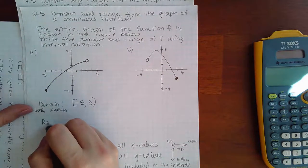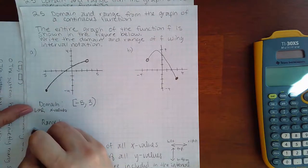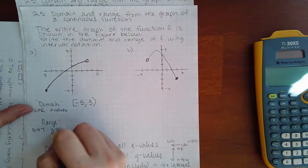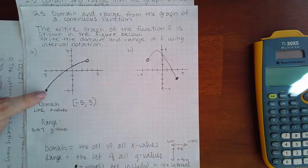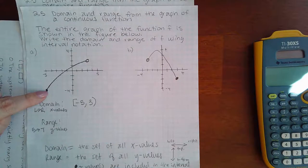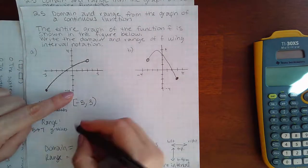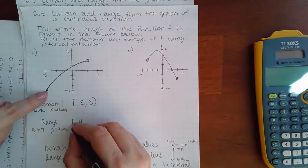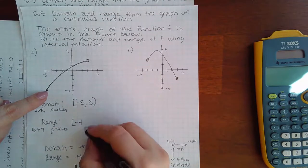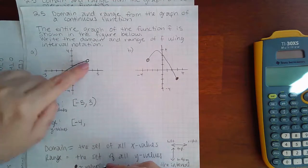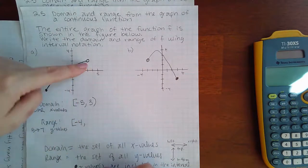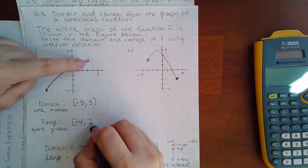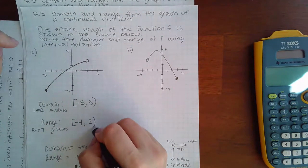Now, for range, that's going to be from the bottom to the top, and I have to use the y values. So this is the very bottom of the graph, and the corresponding y value is negative 4. And it does have a solid dot, so I must use the bracket. Then how high does it go? So it goes the highest it is here, and that y value is going to be 2, but because it's an open dot, I'm going to use a parenthesis.